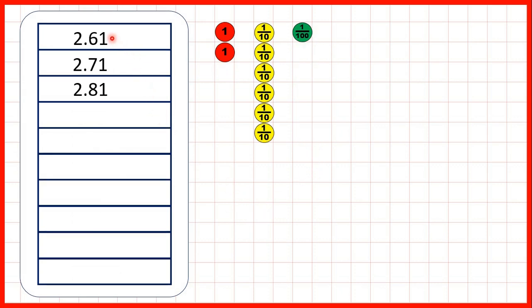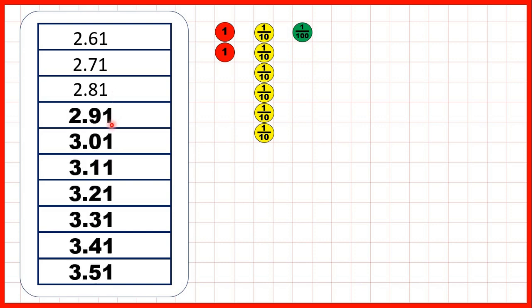Now 2.61, 2.71, 2.81. What are the following numbers? Well, we can see that here we're counting in tenths. And showing this with place value counters, we start with 2.61, so two wholes, six tenths, and one hundredth. And we're counting in tenths.